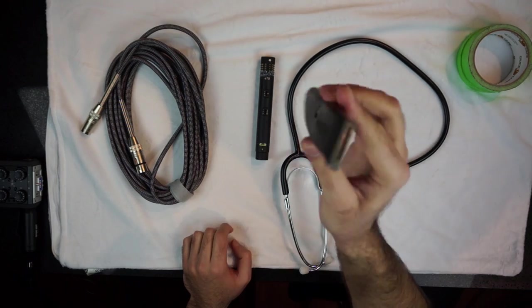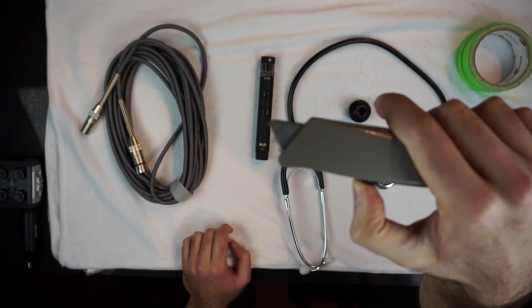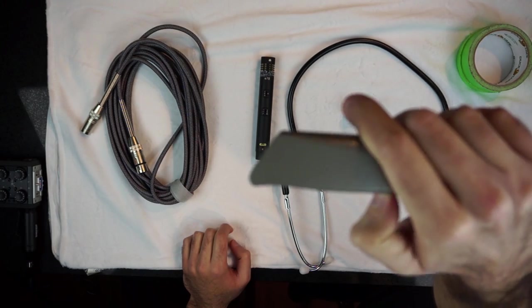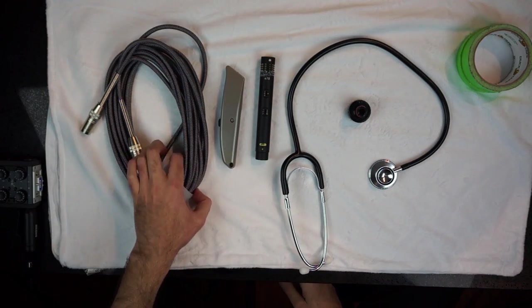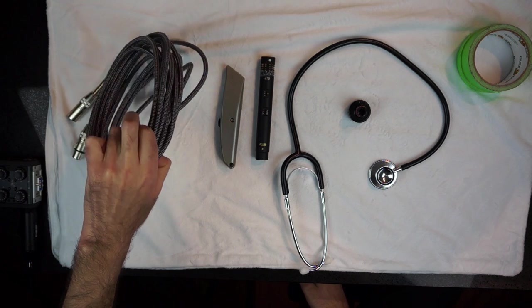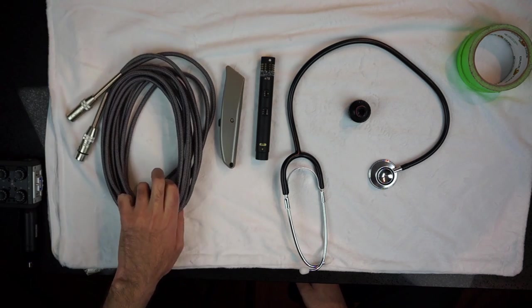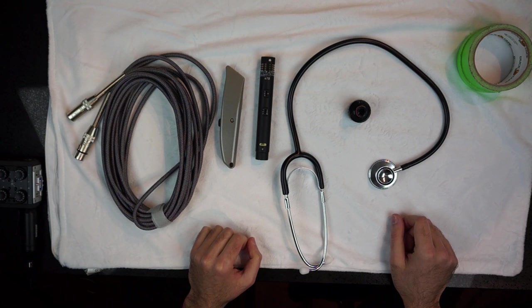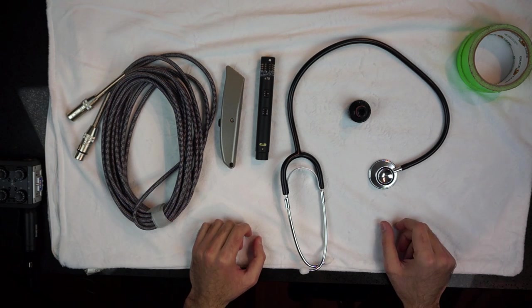So this is an X-Acto knife. We're going to be using this to cut up our stethoscope to make sure that everything can fit together. You can use scissors or kitchen knife or whatever it is you want. And lastly, just a big XLR cable. This one is actually too big for our purposes, but this is the only one I had. My short one broke recently. So this is all we need to get started with making a portable stethoscope microphone.